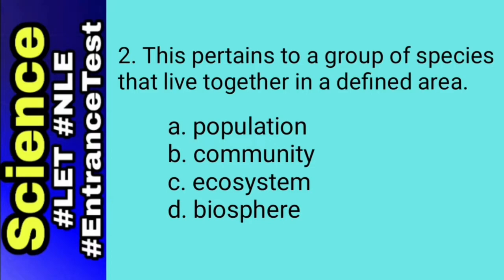So we are left with B and A. Population is a group of individuals that belong to the same species and live in the same area, while community is an assemblage of different populations that live together in a defined area. So for number 2, the answer is letter B, community.